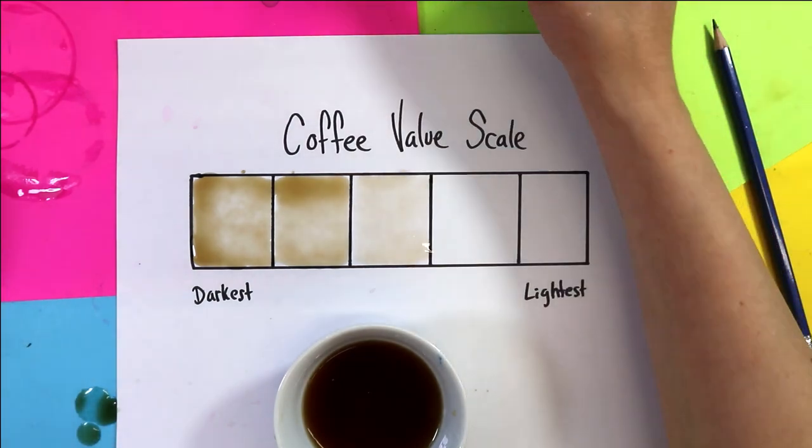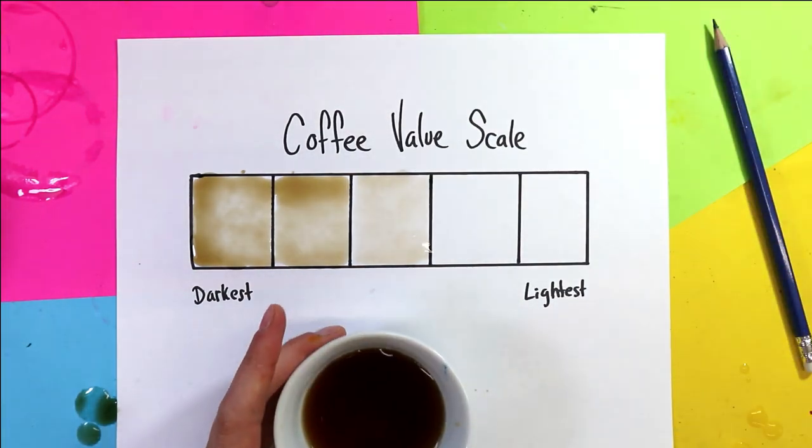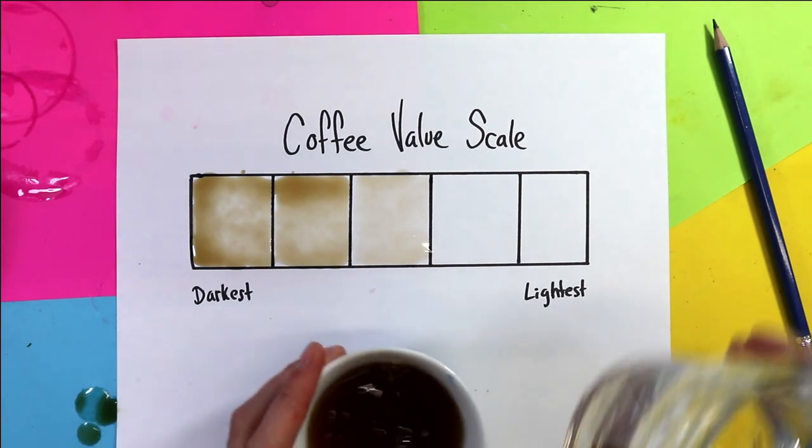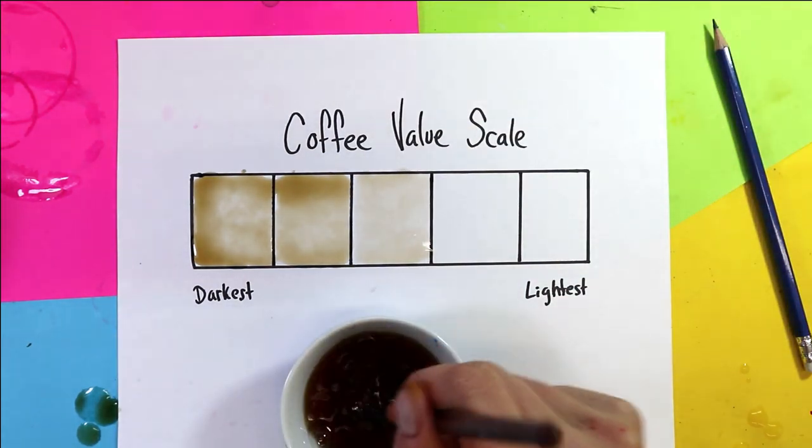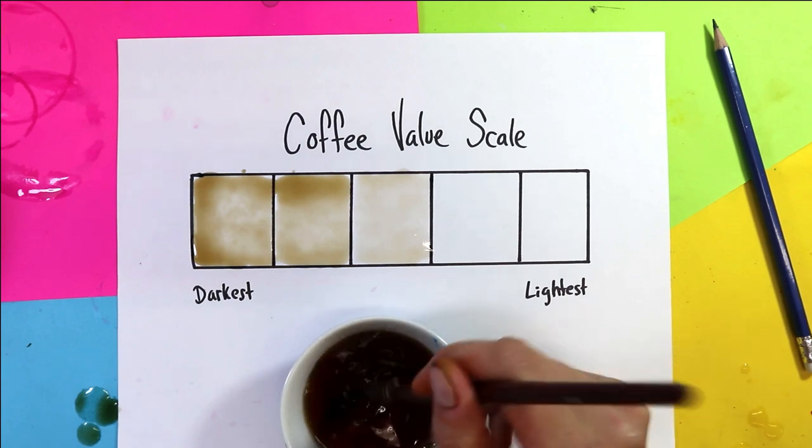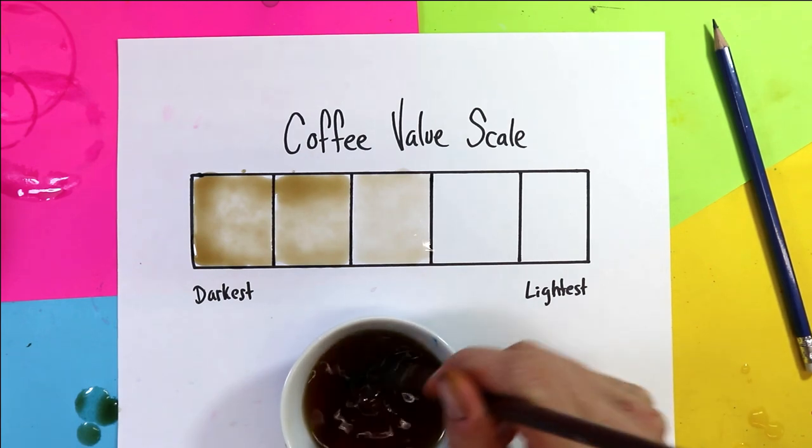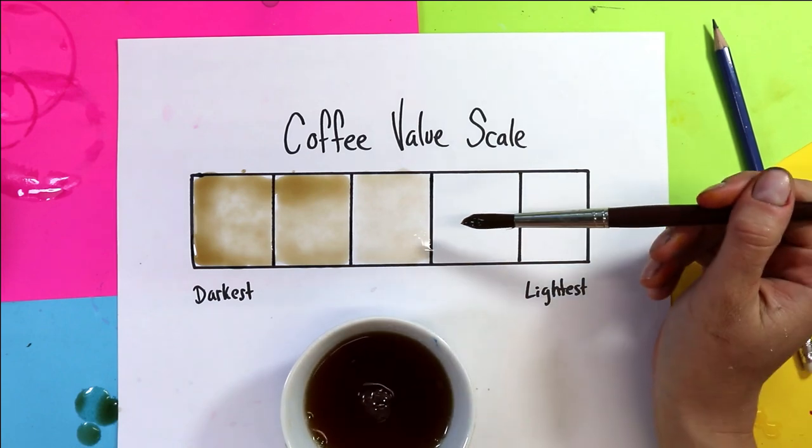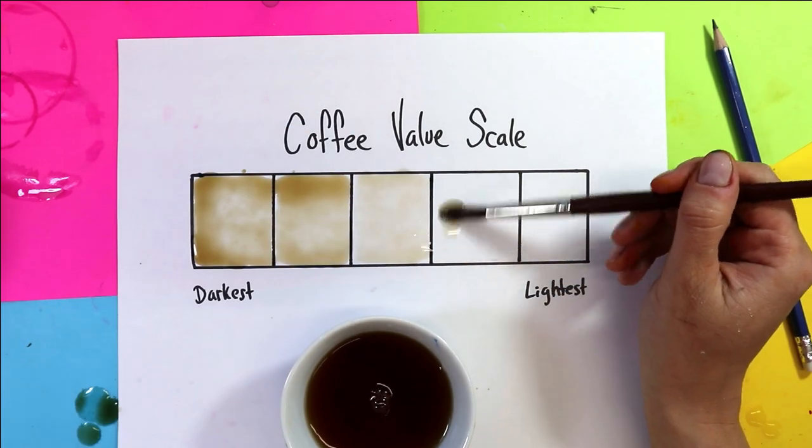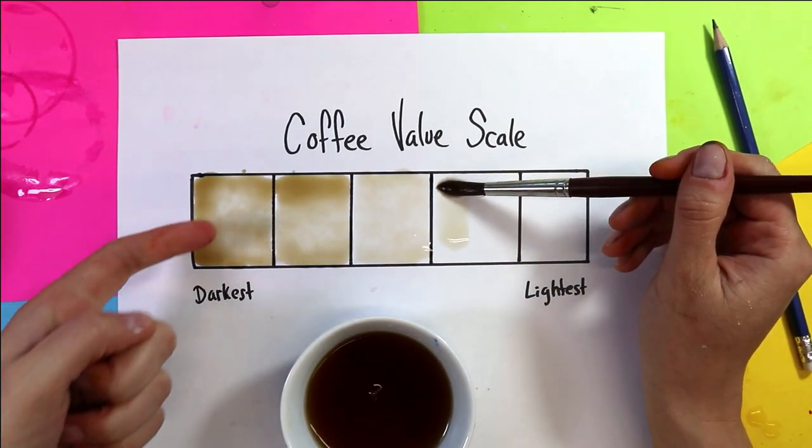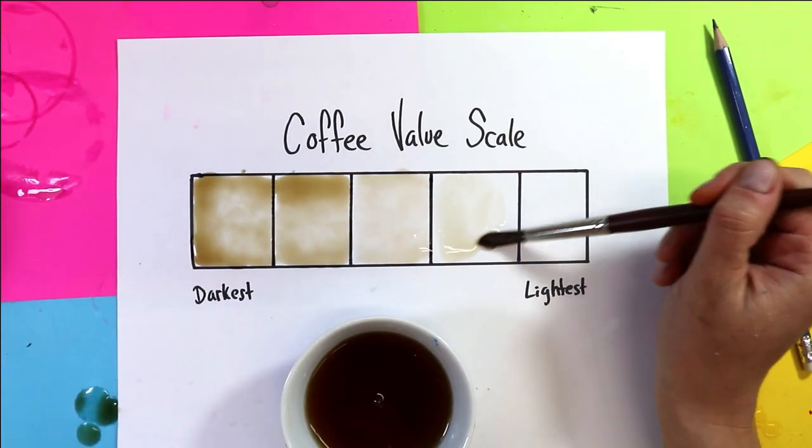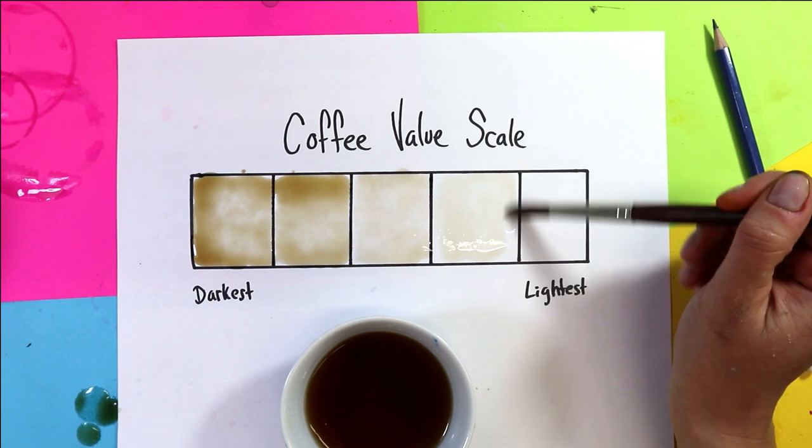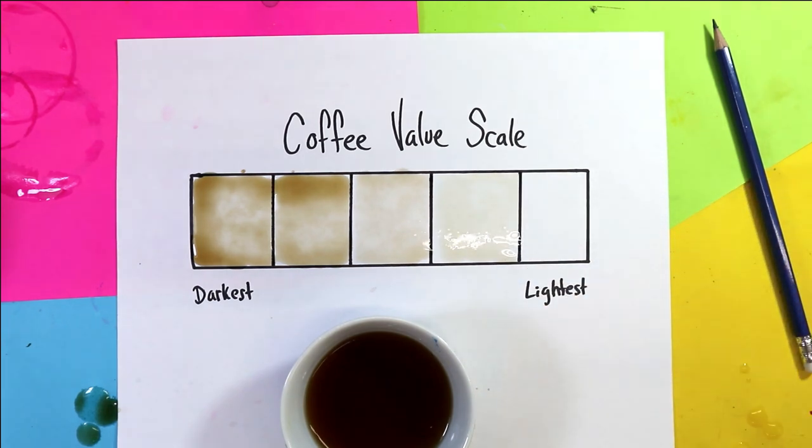Time to mix up again. Add a bit more water. Stir for another 10 seconds. Again, I'm going to be careful not to touch that side because it's just going to trickle in. So now I'm going to paint an even lighter value of coffee.